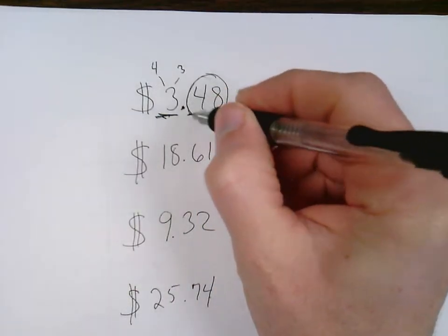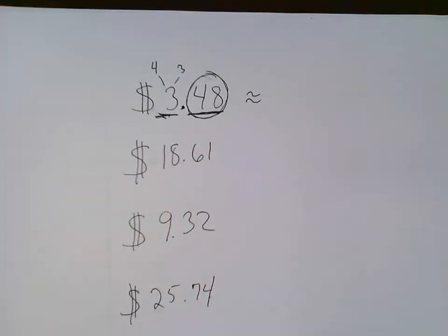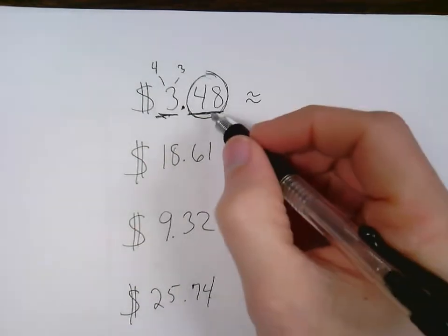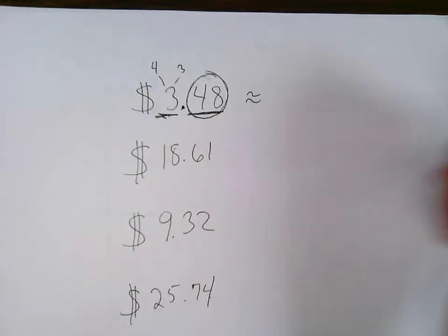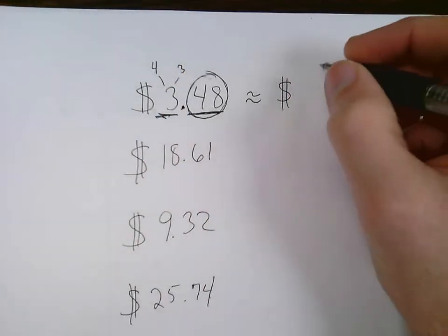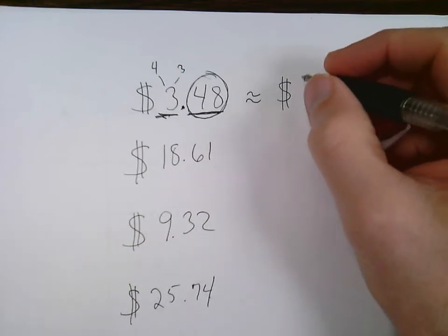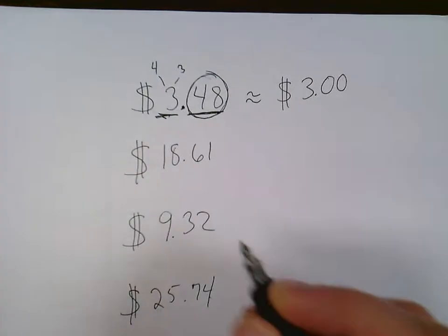So the circled part of the problem is the boss of the underlined part. The underlined part doesn't know what it's supposed to do. The circled part will tell it. So the circled part in this case is less than 50 cents. So the three will stay a three. So my three dollars and 48 cents rounded to the nearest dollar is three dollars. Now this next one down here,